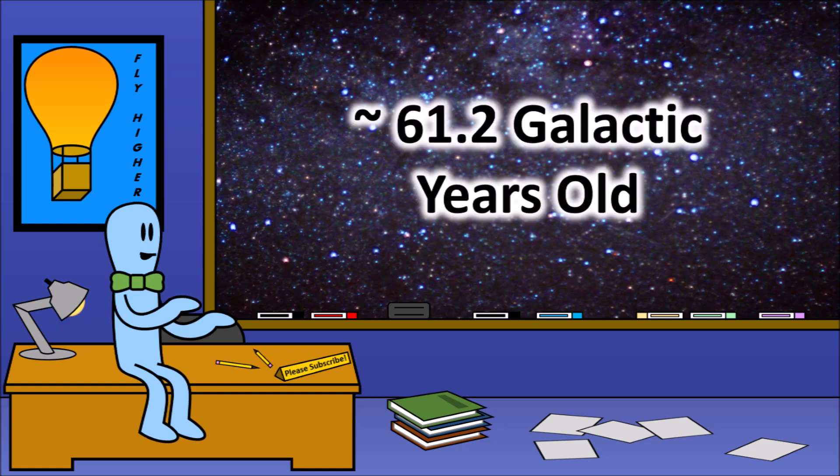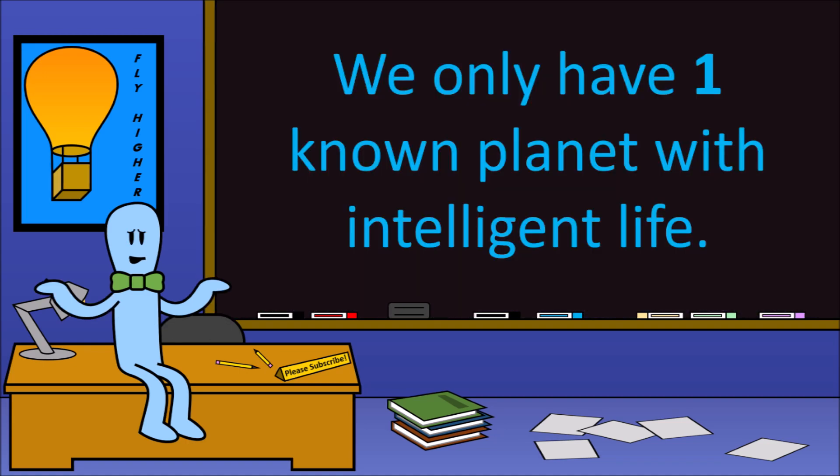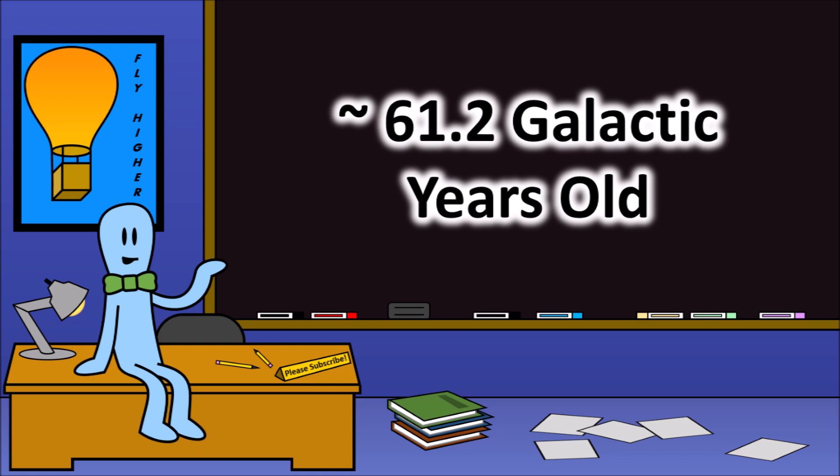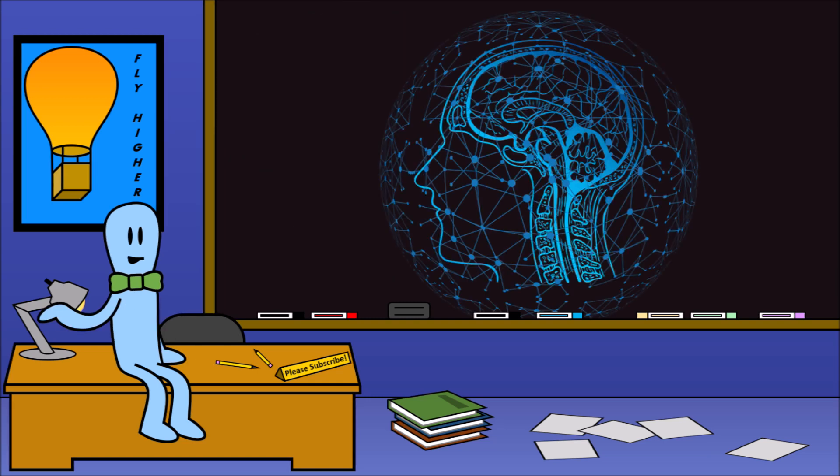It took 61.2 galactic years of setting up the perfect galaxy, sun, and planet for humans to exist. It's impossible to tell since we only have a single data point, but there's a theory that this is the normal time it takes for intelligent life to form because of all these requirements for life and how long it takes to set them up. And if that's the case, that would mean that intelligent life is completely new to the universe.